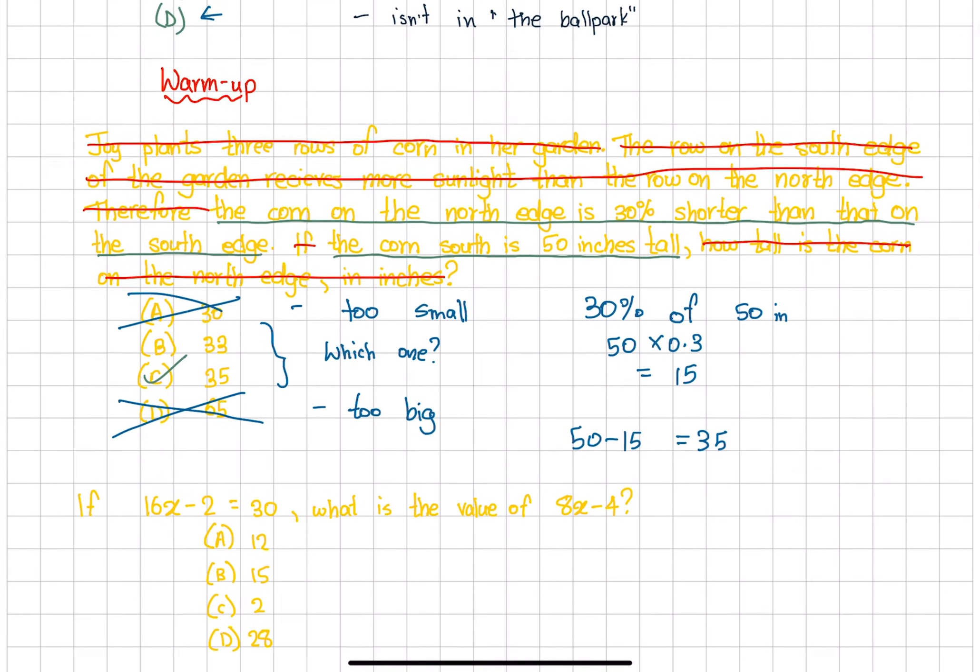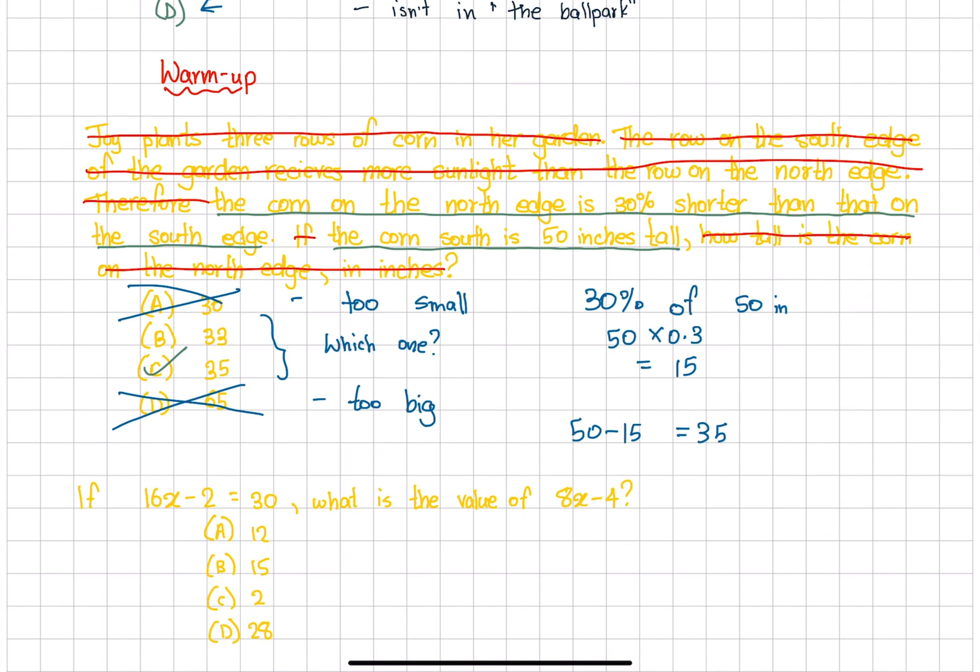Now our next question: If 16x minus 2 equals 30, what is the value of 8x minus 4? There's not much crossing out to do. We've been given that 16x minus 2 gives us 30, so what is 8x minus 4? You need to make sure that you are looking for the correct answer because you can fall for trap answers.